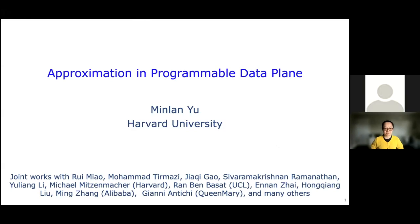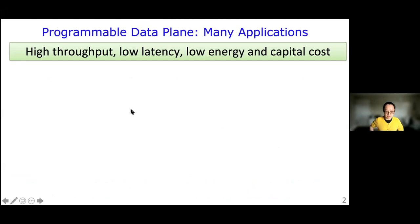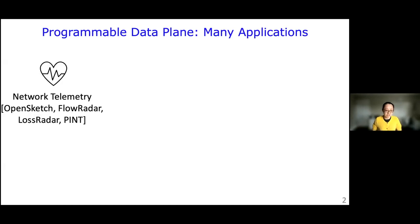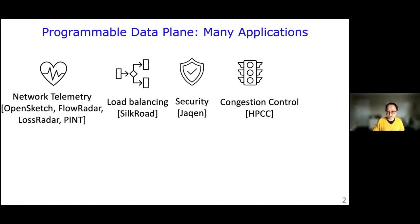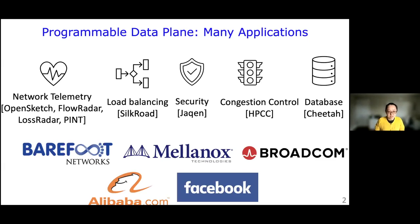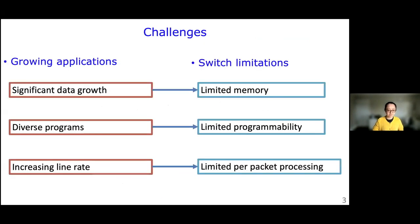I'll talk about approximation in programmable data planes. Programmable data planes are really popular because they can provide high throughput, low latency, and low energy and capital cost. Many teams, including my own, have been investigating applications to run on programmable data planes, especially programmable switches. In my team we have been building network telemetry solutions for network functions like load balancing, security, congestion control, and even in-network computing applications like databases. Many of these applications were already adopted by switch vendors like Intel, Barefoot, and Xilinx, and used in production data center networks like Alibaba and Facebook.